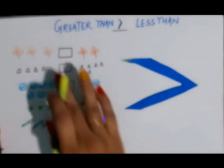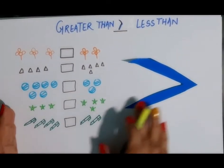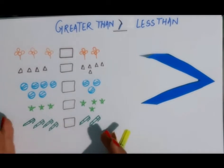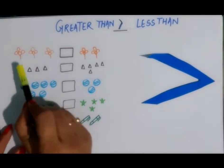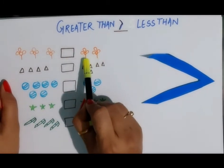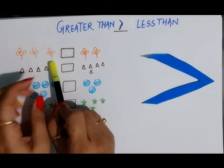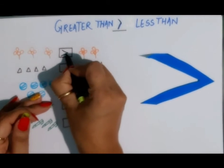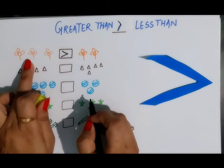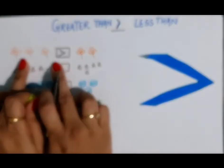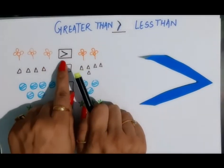Let's start. Here are a few examples — a few pictures on both sides. Now we will compare the number of pictures. How many flowers are there? One, two, three on this side, and one and two on the other side. So the number of flowers is greater on this side. The open side goes to the greater side and the closed one to the less than side. The number of flowers is more on this side and less on that side, so we use this sign.